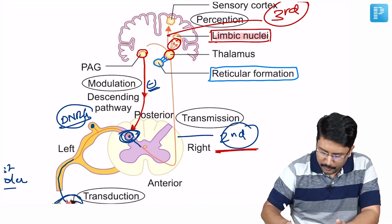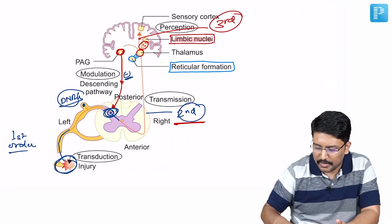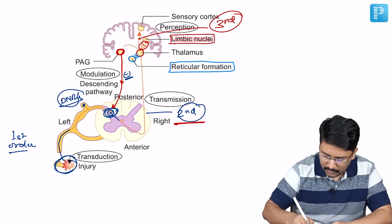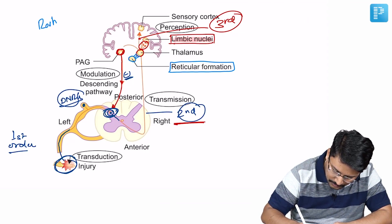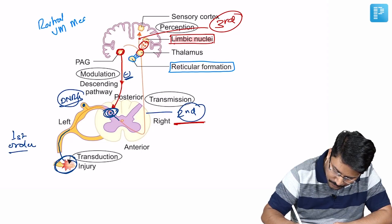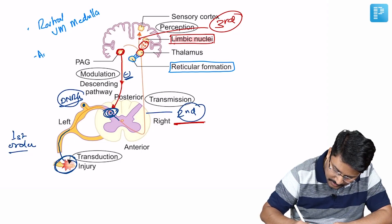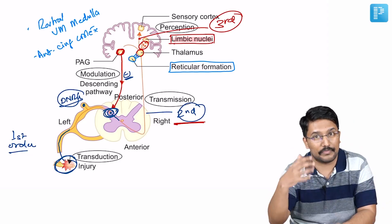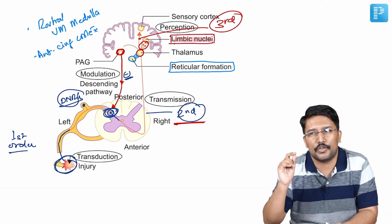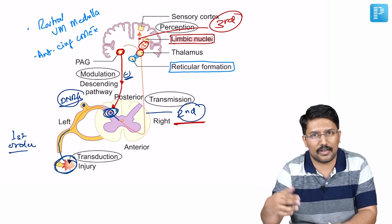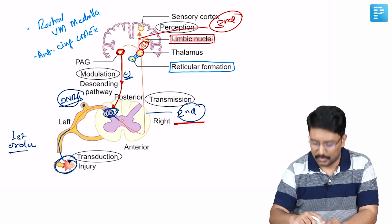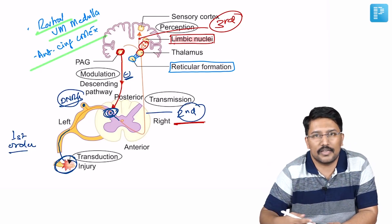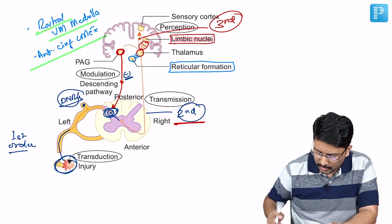The activation begins from the periaqueductal gray matter, but there are other areas which influence the descending pain modulation pathway. You have to remember two areas: rostral ventromedial medulla and anterior cingulate cortex. Several functional MRI studies when you give a placebo saying this is a painkiller show that these areas are functionally active.